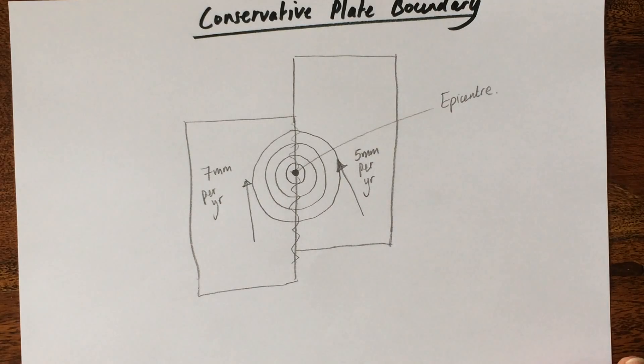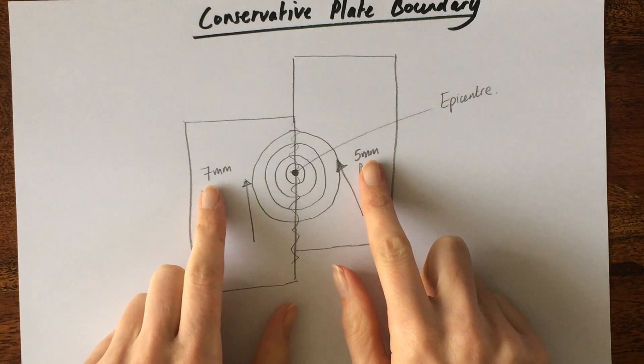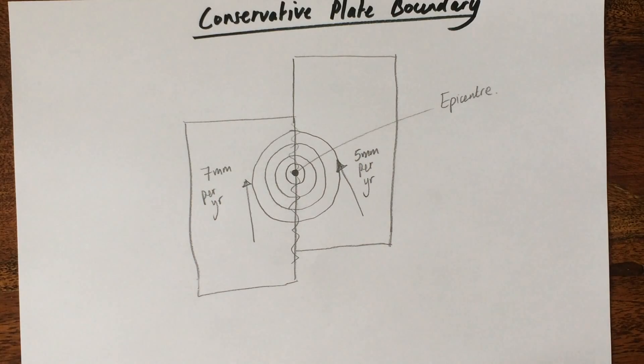That is our conservative plate boundary. Don't forget to put arrows on your diagram to show movement. With this one, I've had to put the rates on to show that they're moving at different rates. And don't forget your starting point, which is always the convection currents in the mantle, which are moving the plates side by side in this example.